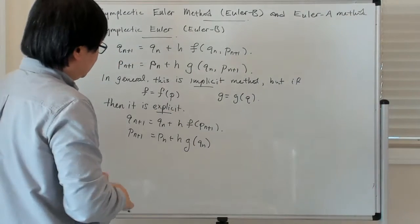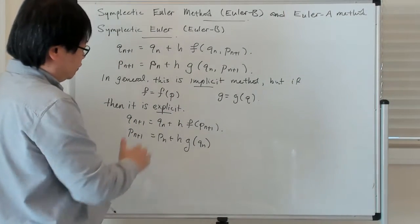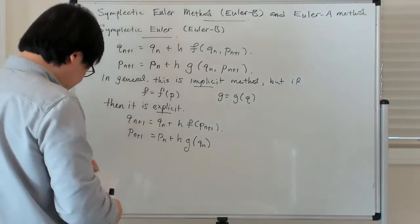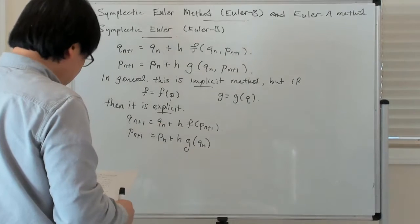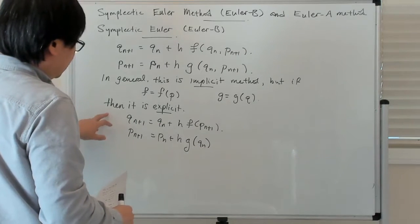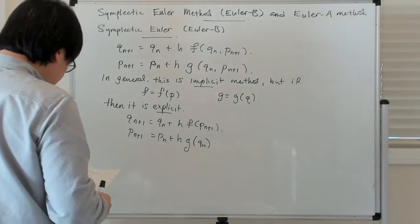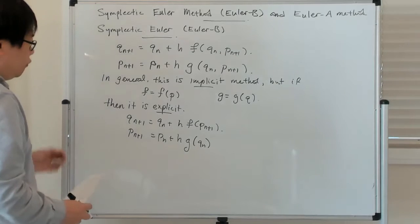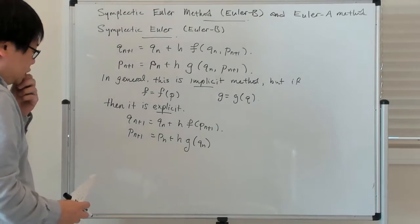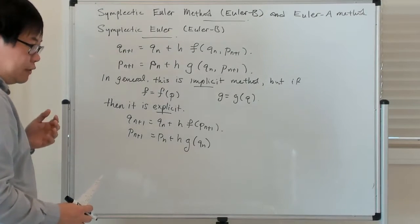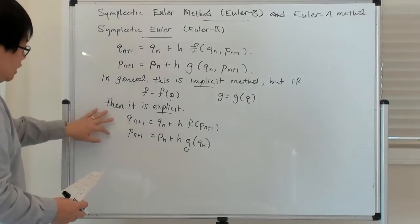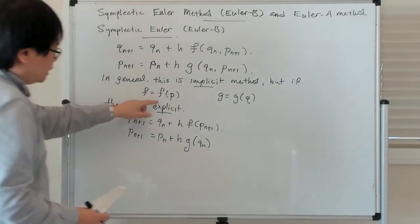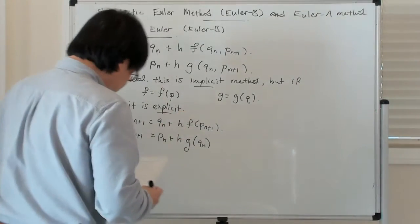If the vector field has this partitioned structure — where it doesn't depend on all variables jointly — then the symplectic Euler method will be explicit. This arises naturally with a separable Hamiltonian, which we had introduced before, and indeed if you have a separable Hamiltonian, it has exactly this kind of structure.